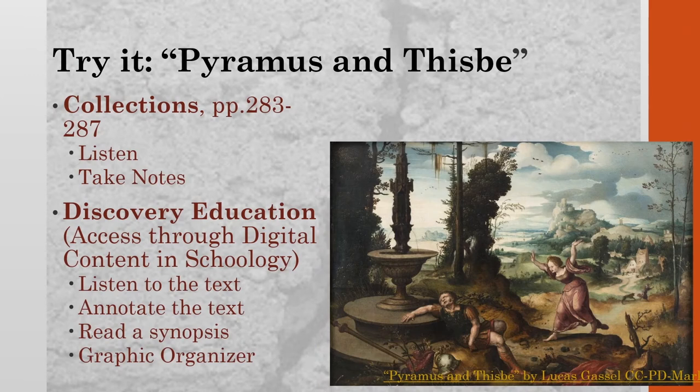Pyramus and Thisbe are two young lovers featured in an ancient Babylonian story recounted in the Metamorphosis of the Roman poet Ovid. Their parents occupied adjacent houses, and the young people fell in love, but their parents forbade them to marry. The lovers held whispered conversations through a crack in the wall between their houses. Finally, they decided to meet at the tomb of Ninus under a white mulberry tree.